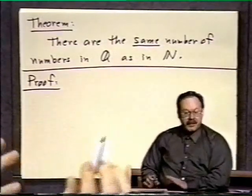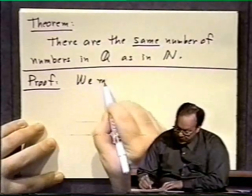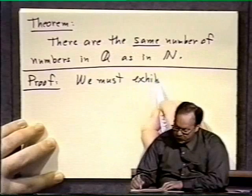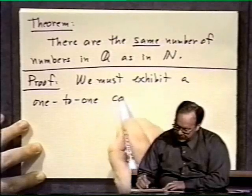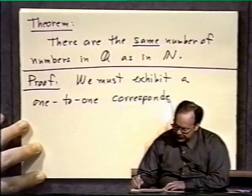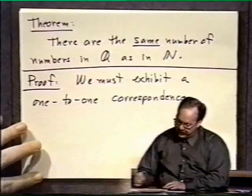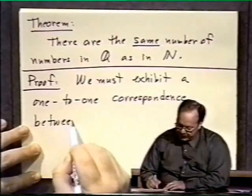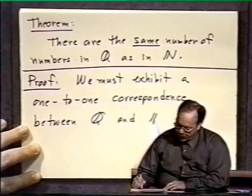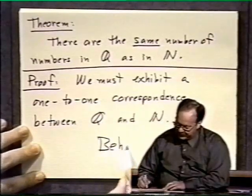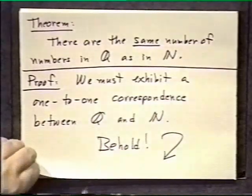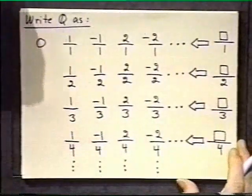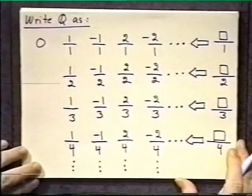And here is how the proof will go. What we must do is exhibit a one-to-one correspondence — we must show a one-to-one correspondence between the sets, that's the matching we showed for the finite sets on the previous page — between Q and N. Well, there's one way to put this: behold. I will now show you such a correspondence, and then I will show you why it actually is a correct correspondence. Here is the correspondence as I've pre-drawn.